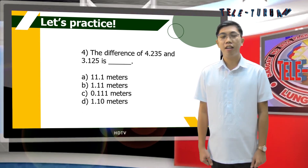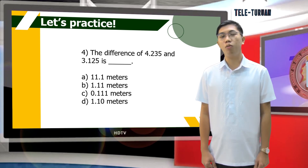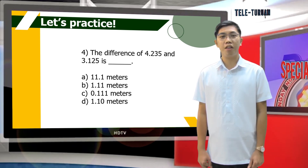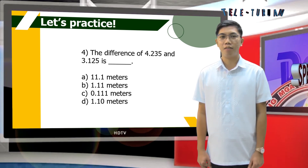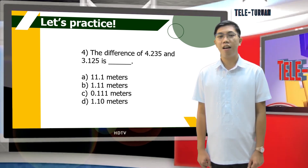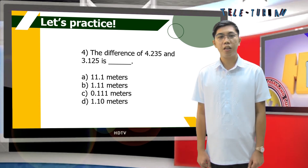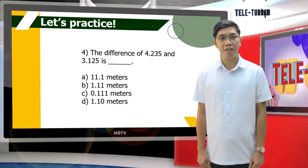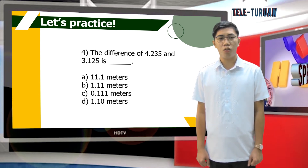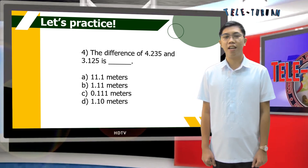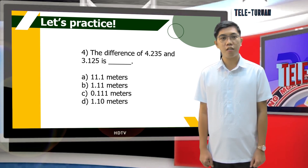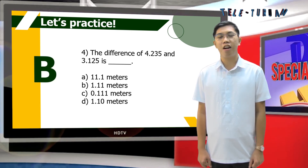For number 4: the difference of 4 and 235 thousandths and 3 and 125 thousandths is blank. The choices are A: 11 and 110 thousandths. B: 1 and 11 hundredths. C: 111 thousandths. Or D: 1 and 10 hundredths. The correct answer is B, 1 and 11 hundredths.